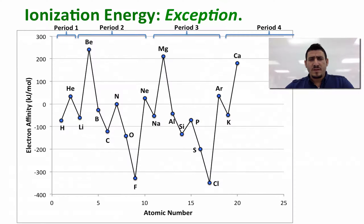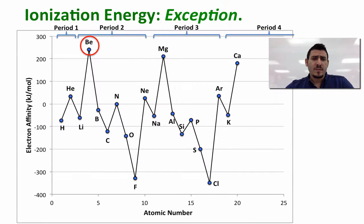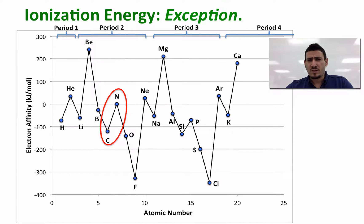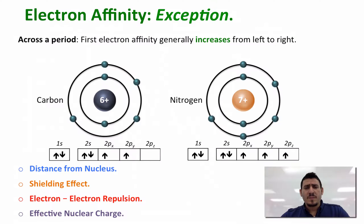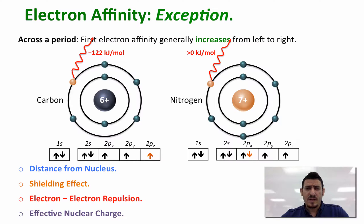Electron affinity is expected to increase from left to right, meaning it should become more negative. However, we can see that energy is required to add an electron to beryllium. Similarly, nitrogen requires more energy to add an electron than carbon, even though nitrogen is to the right of carbon. We also don't see the same phenomenon with oxygen — when we add an electron to oxygen, energy is released. Let's discuss these exceptions, starting with the difference in energy released between carbon and nitrogen. Adding an electron to each, the energy released for carbon is much higher than that for nitrogen.